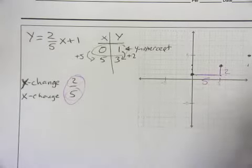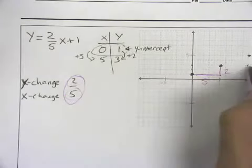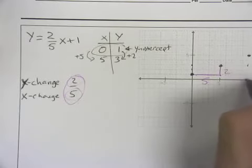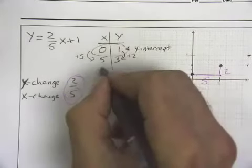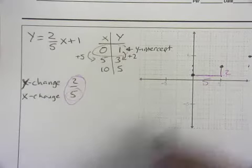And it turns out that that same change could work again. Increase your x by 5, increase your y by 2. Notice the point that you would get from that, whether you do it by adding or just by moving your pen or pencil on the graph. Here we'd have 10, 5 is going to be the same.